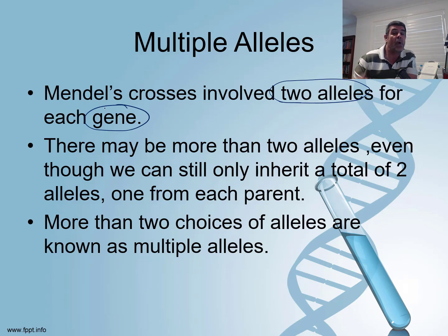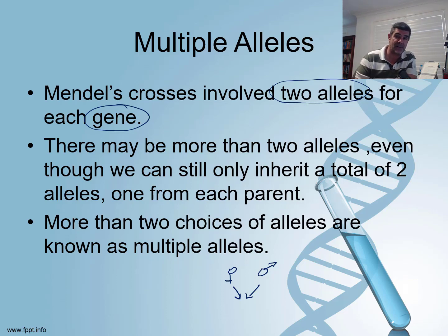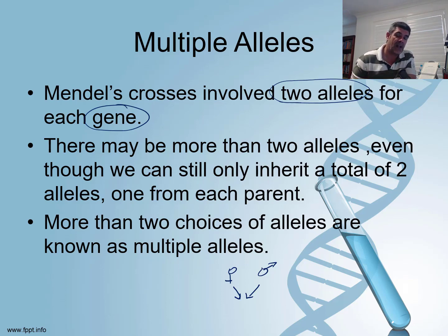But there are occasions where there are more than two alleles. The important thing to remember is that when we inherit alleles from our parents — from our mother and our father — we can still only get two alleles: one from the male and one from the female. However, with multiple alleles, there is more than two possibilities for what can be inherited. One of the best and easiest examples to deal with is that of blood groups.